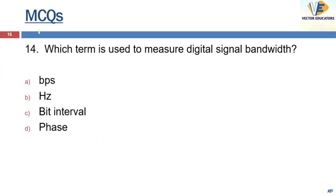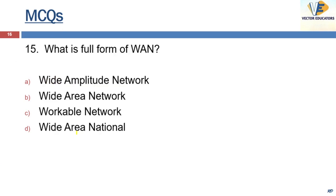Which term is used to measure digital signal bandwidth? The answer is bits per second, BPS. And for analog signals, it is Hertz.